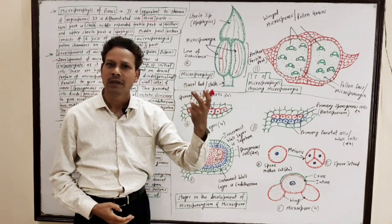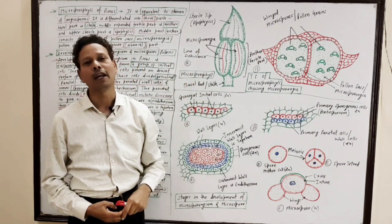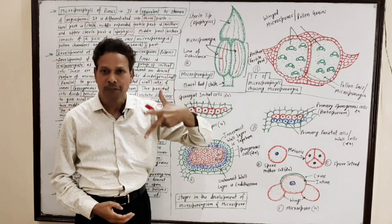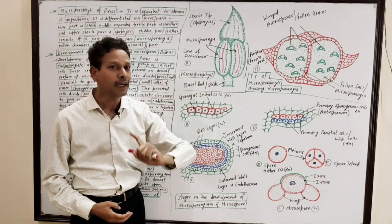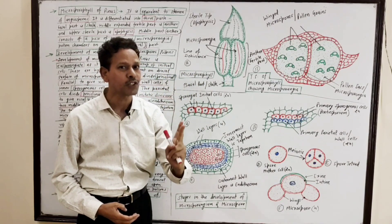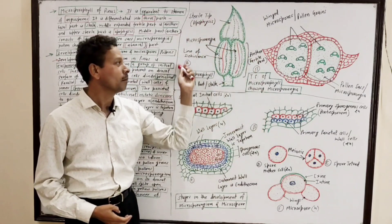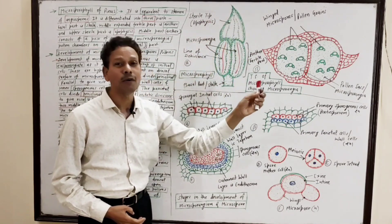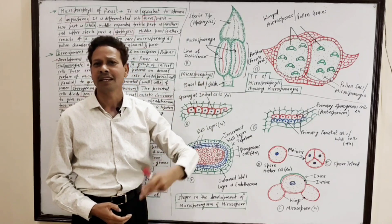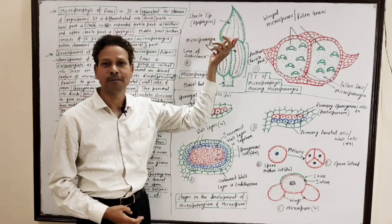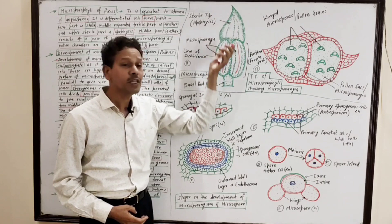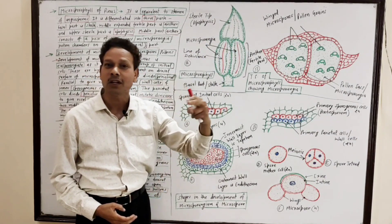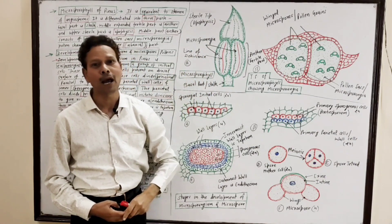As we know, in our last lecture we discussed the male cone. That male cone is formed by an aggregation of about 60 to 100 microsporophylls. This microsporophyll is equivalent to the stamen of an angiosperm flowering plant.